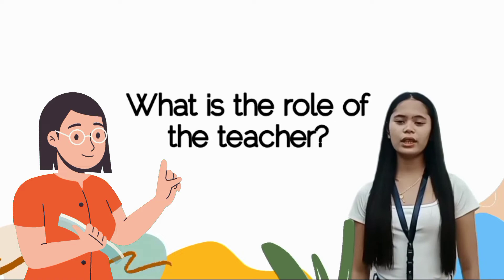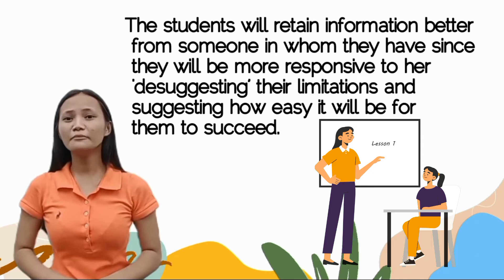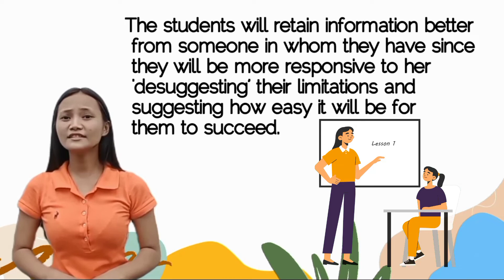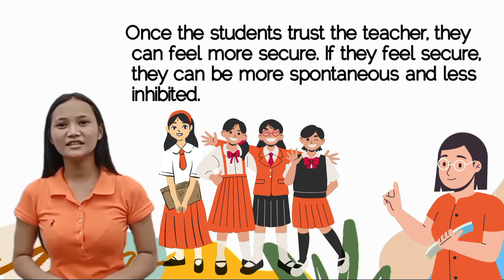The teacher is the authority in the classroom. In order for the method to be successful, the students must trust and respect the teacher. Students will retain information better from someone they trust, being more responsive to suggestions about their capabilities and how easy it will be for them to succeed. Once the student trusts the teacher, they can feel more secure, and if they feel secure, they can be more spontaneous and less inhibited.